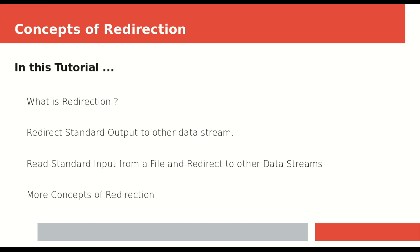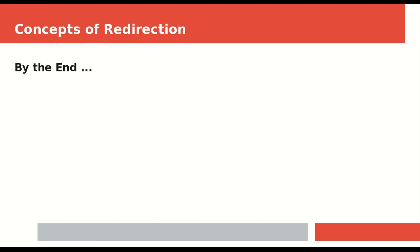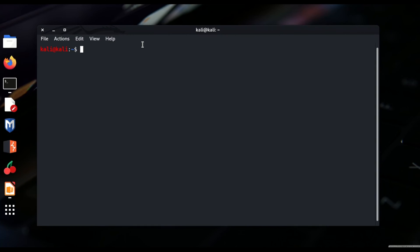We will be trying to redirect standard output to other data streams, and you will learn to read standard input from a file — not just from the terminal, but from any other location on your PC — and redirect it to another data stream. By the end of this tutorial you will have a very good understanding of redirecting data streams from one location to another and from one data stream to another.